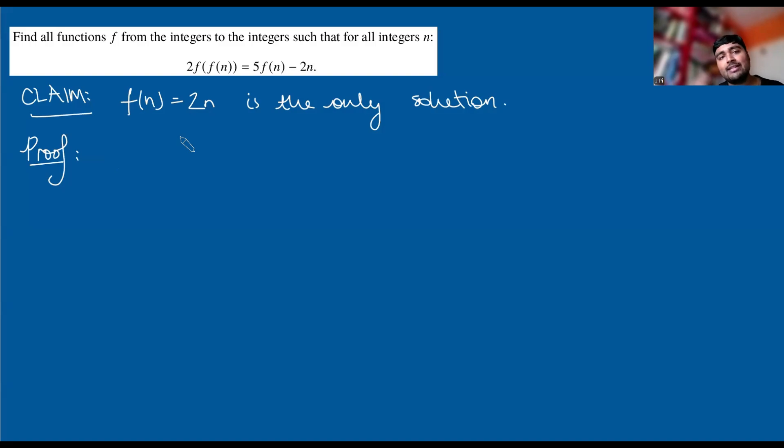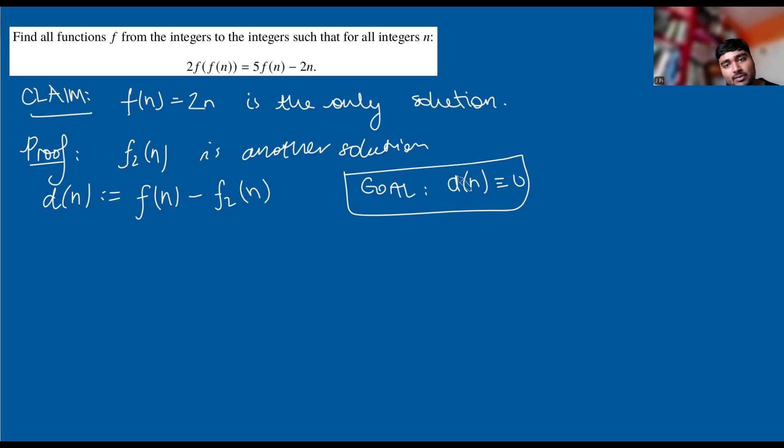In order to prove that f(n) = 2n is the only solution to this equation, we're going to be assuming there's another solution and showing that that solution must be 2n in disguise. So let's suppose f₂(n) is some other solution. We're going to try and prove that f₂(n) is 2n. The way we're going to do that is by considering the difference. So d(n), I'm going to define to be equal to f(n) - f₂(n). My goal is to prove that d(n) is the zero function.